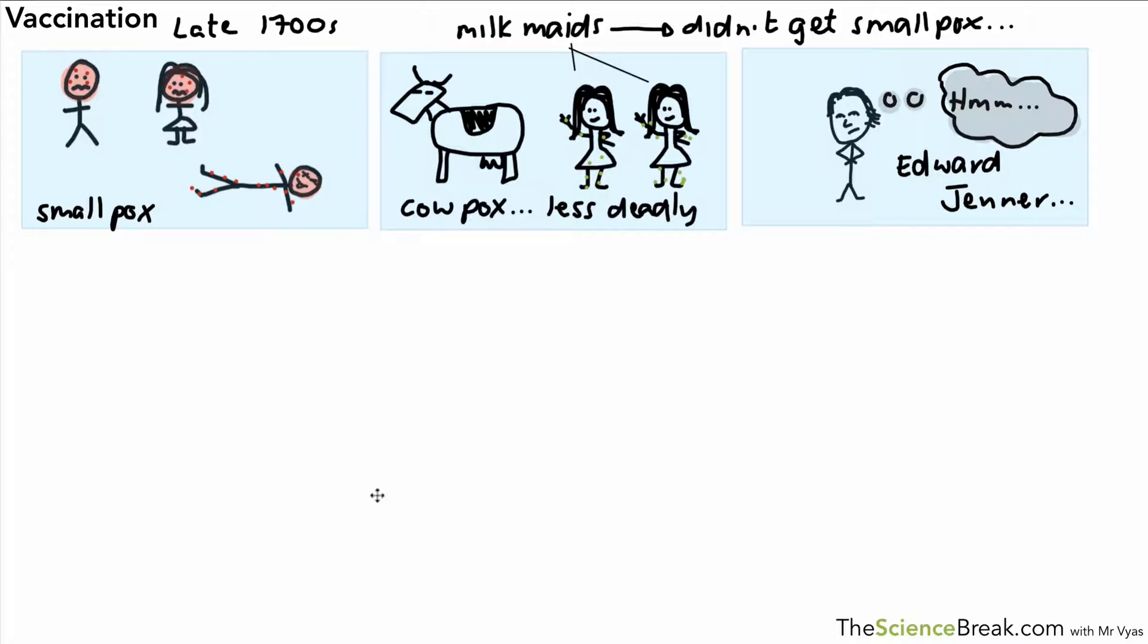This might seem like quite an outrageous experiment, and it was, but at the time he did this experiment. He took a young boy who was around the age of eight or nine and he scratched his skin and infected him with the pus from a cowpox blister.